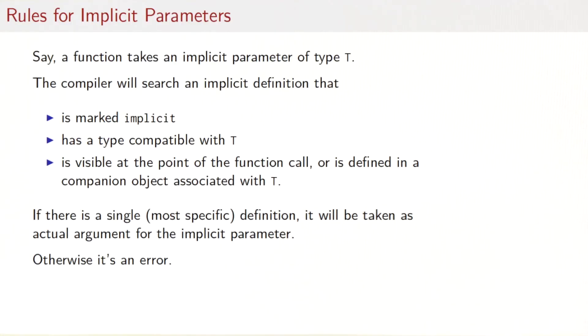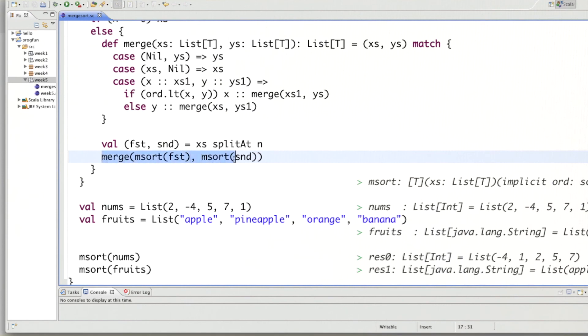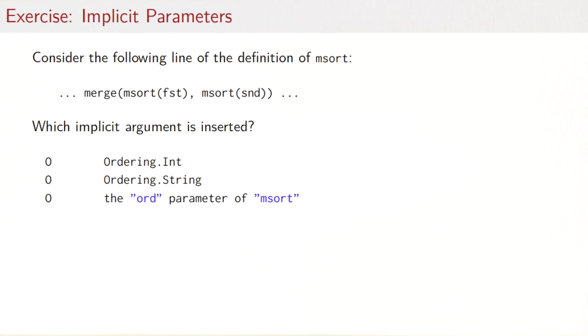So once the compiler has done that search, if it comes back with a single most specific definition, that definition will be taken as the actual argument. So that will be the synthesized argument for the implicit parameter. And otherwise, if the compiler finds nothing, or it defines several possible candidate definitions, then it's an error. So let's test your understanding with a simple quiz. Consider the line in the definition of mSort where you have the two recursive calls. So that would be this line here. Consider which definition of ordering is implicitly inserted by the compiler here and here. Is it ordering.int or ordering.string or the ORT parameter of the mSort function?